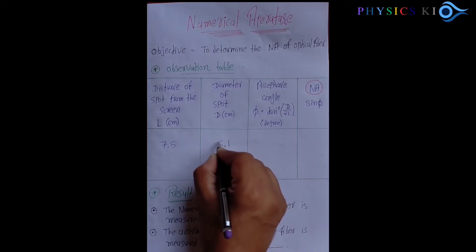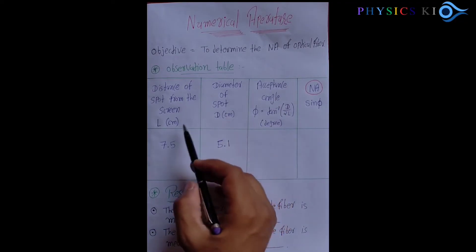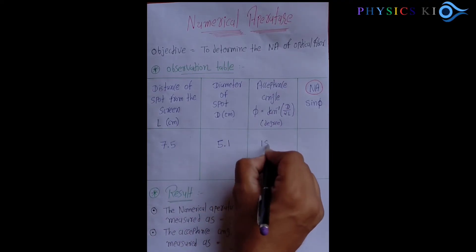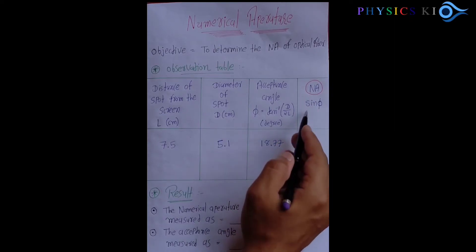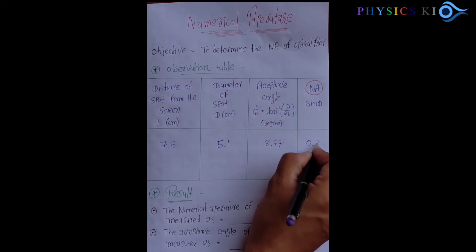Using these two values, we can calculate our acceptance angle. We have an equation: tan inverse (d by 2L). Putting all the values, we get 18.77 degrees. Taking the sine of this angle, I got 0.32.